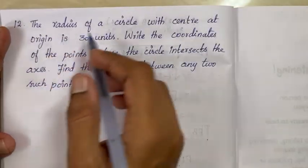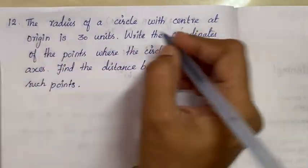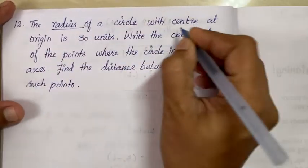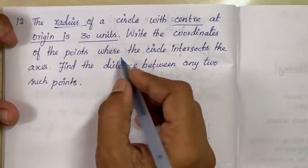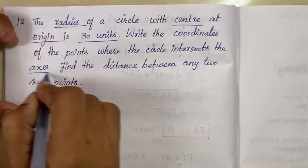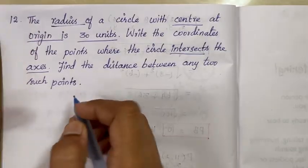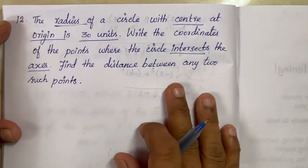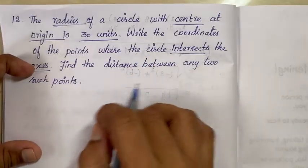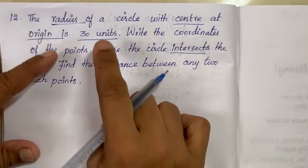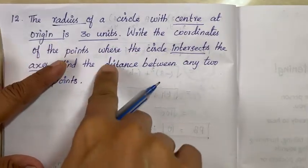Next question: The radius of a circle with center at the origin is 30 units. Write the coordinates of the points where the circle intersects the axes, and find the distance between any two such points.